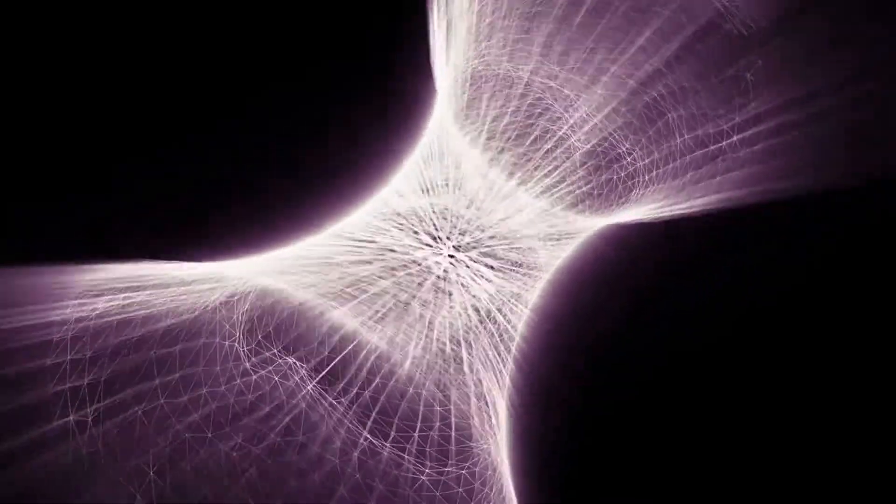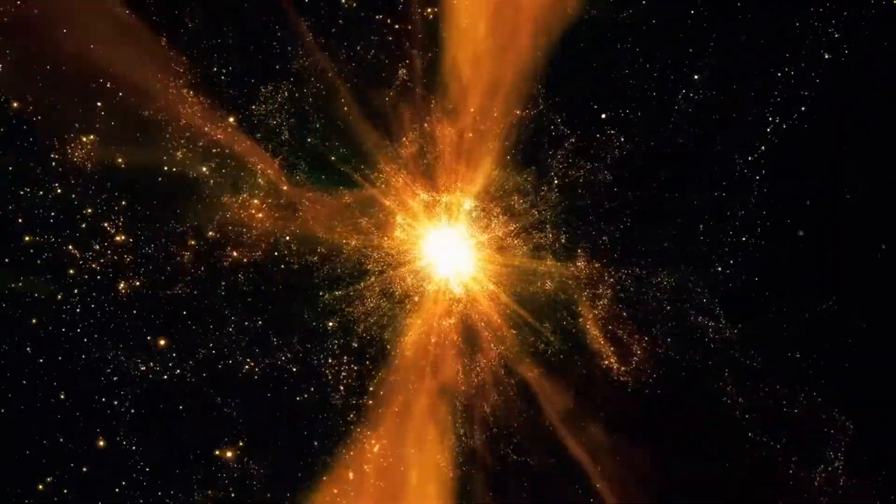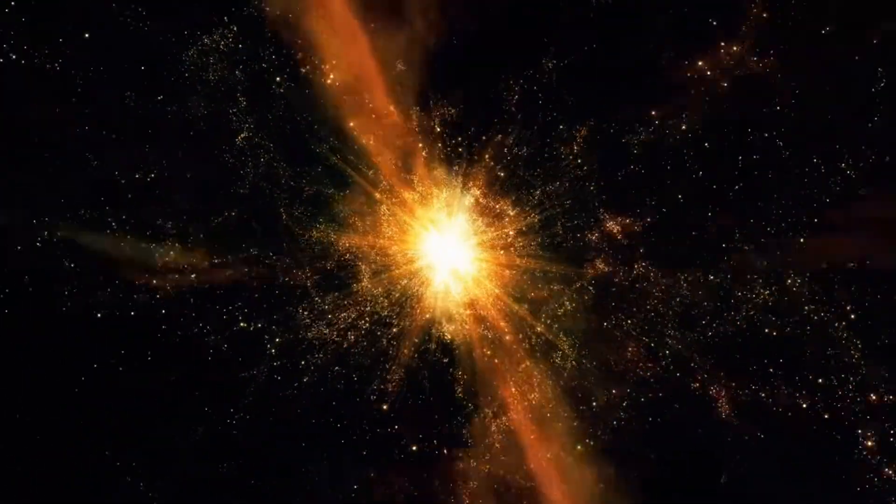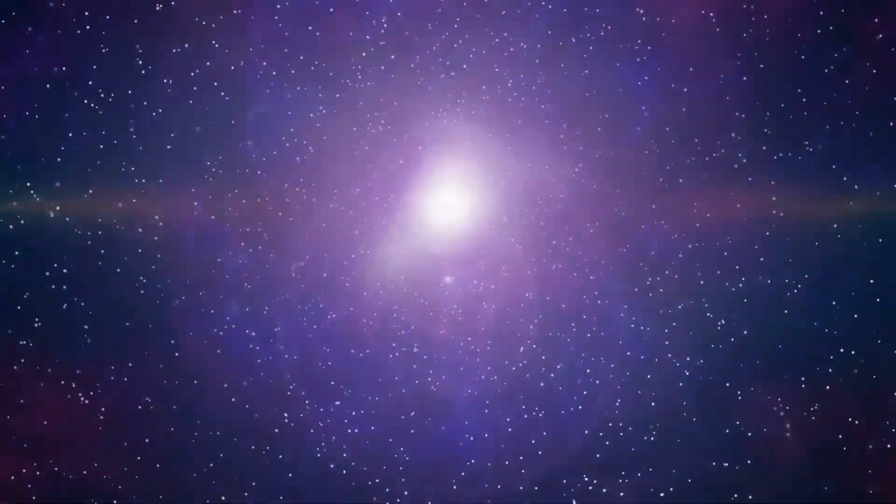So, what does the Big Bang Theory tell us about the universe? First of all, it suggests that the universe has a finite age. Scientists estimate that the Big Bang occurred about 13.8 billion years ago, which means that the universe has been around for a little over 13 billion years.